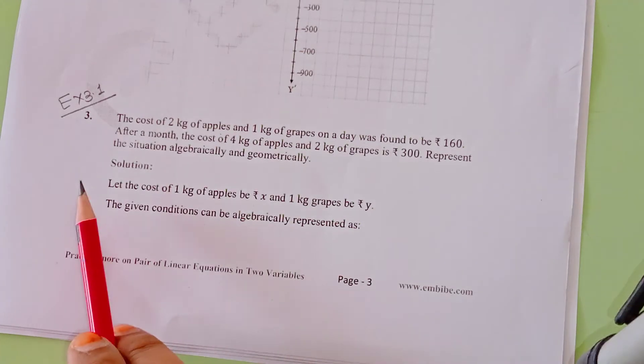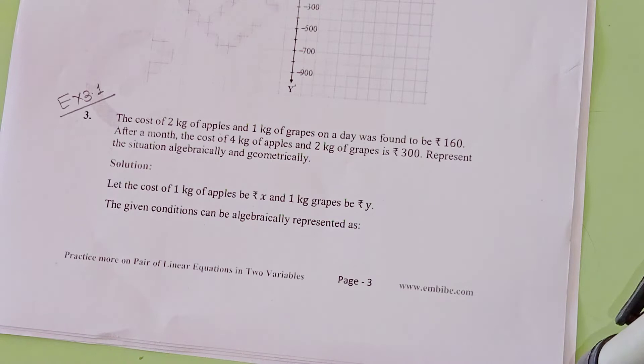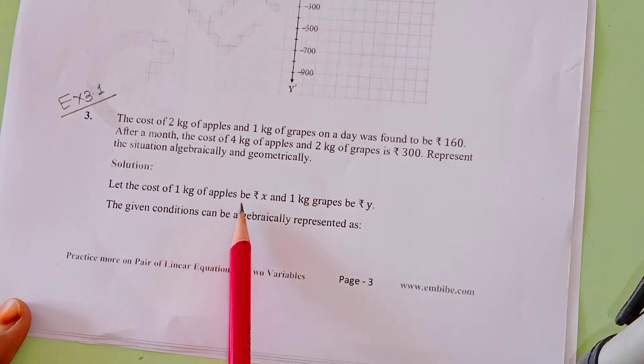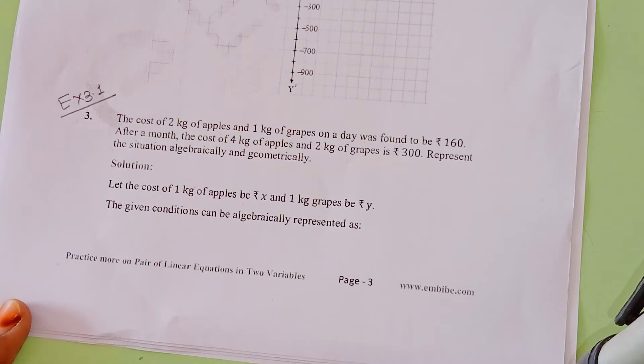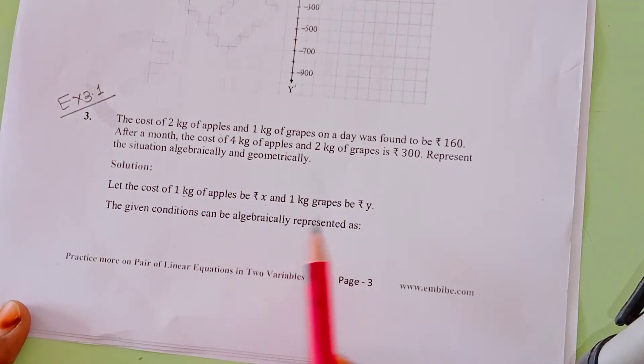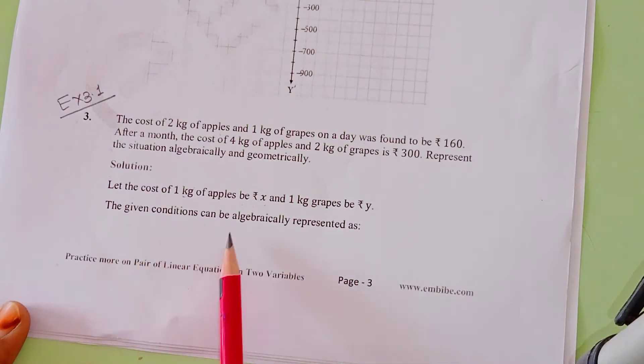Represent this situation algebraically and graphically. We have to make this situation into equations and represent it in the graph. So the solution is: let the cost of 1 kg of apples be Rs. x and 1 kg of grapes be Rs. y. According to the given condition, the algebraic expression is...